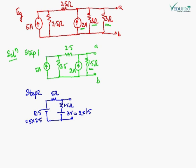Now using source transformation, I have converted this circuit. This is the Rsh and this is the series resistance. Adding these two resistances gives 5 ohm. I have replaced these two resistances by a single resistance of 5 ohm and replaced this current source by a voltage source.